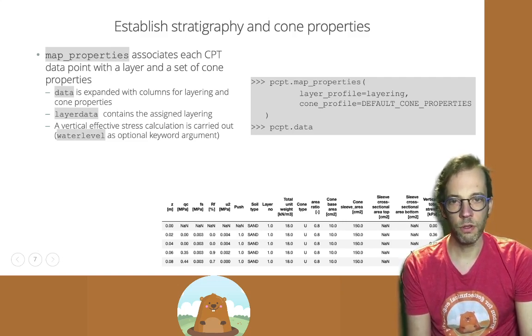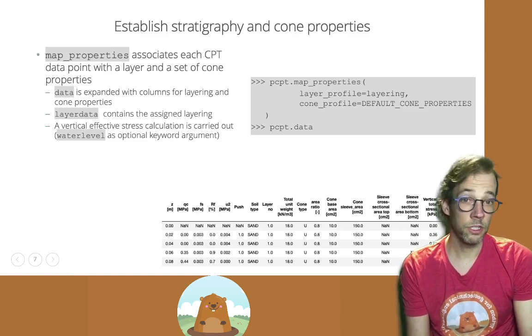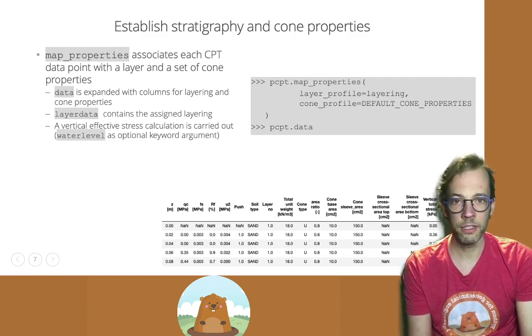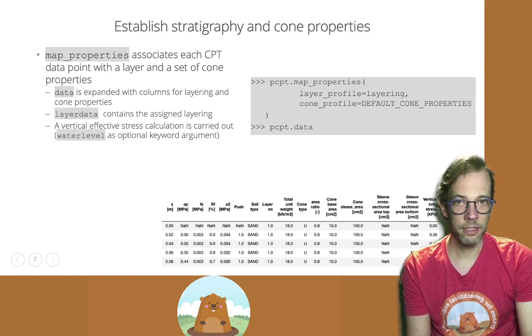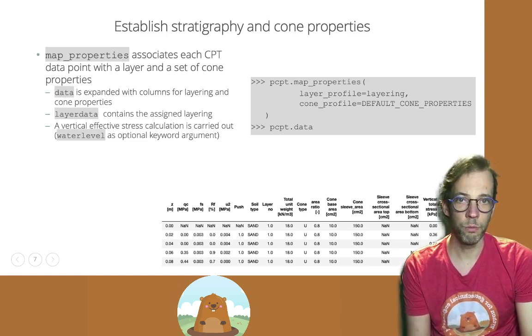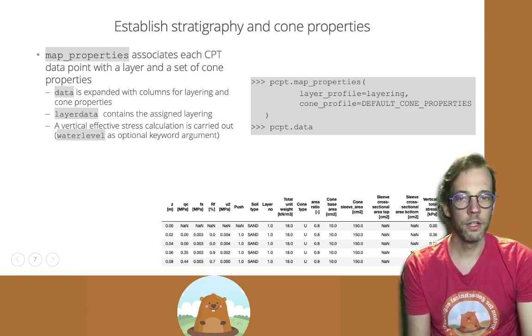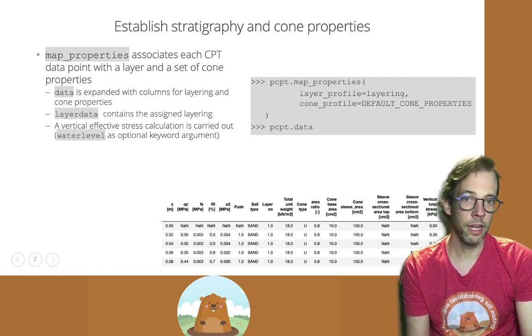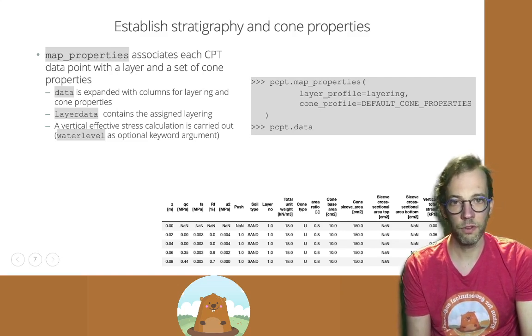Once we execute that mapping, the data attribute of the CPT processing object, which initially only contained the raw data, will be expanded with columns which reflect the layering, the layer number, the soil type, the total unit weight, and the cone properties.